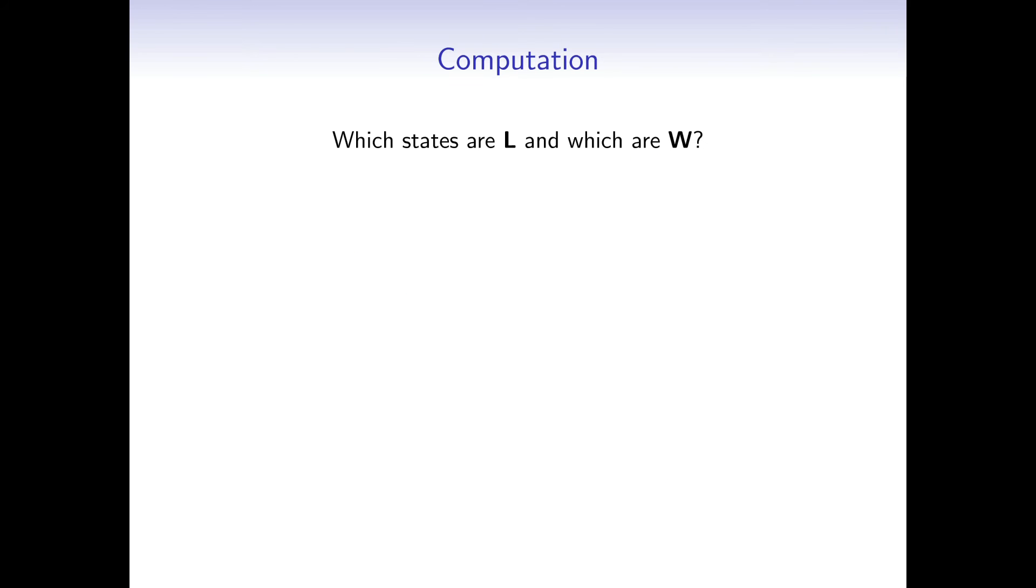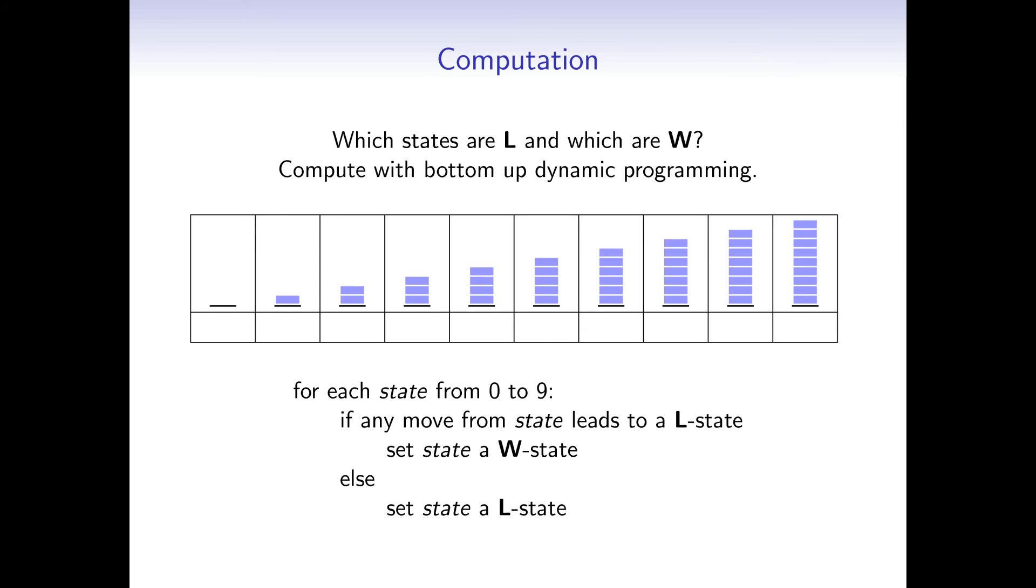Now to the computation. Which states are losing and winning states? We simply compute them with bottom-up dynamic programming. We iterate over all states and determine if we can reach an else state from this state. If we can reach one, the current state is a winning state. Otherwise, it is a losing state. So we start with the pile with no blocks. We can't perform any move from this state, so this is a losing state. The same thing goes for the pile with 1 block.